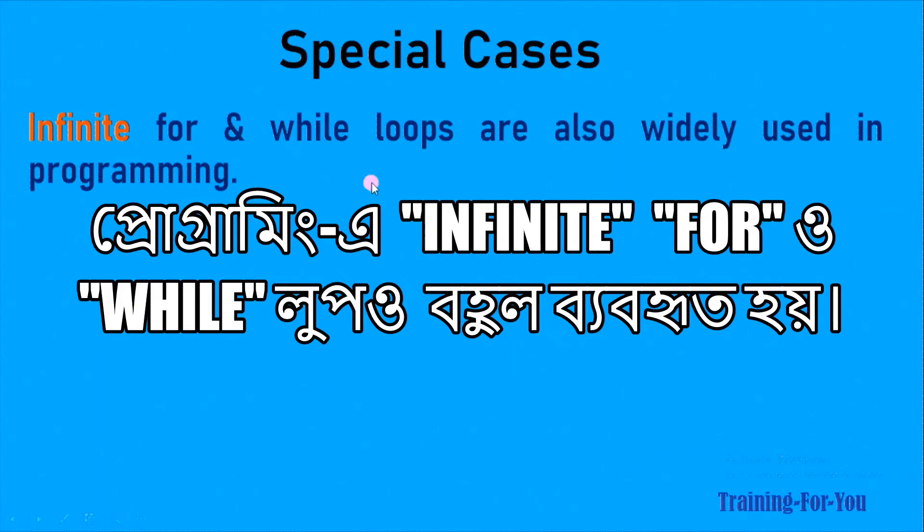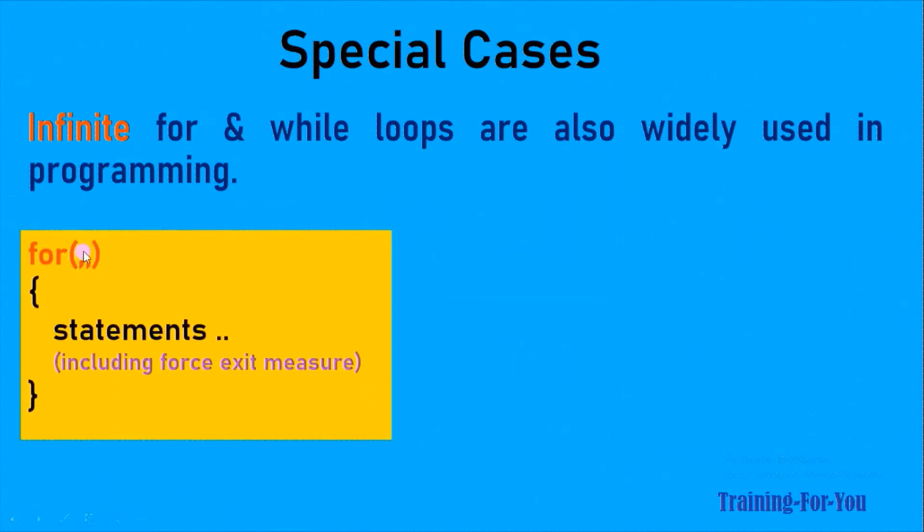Infinite for and while loops are also widely used in programming. The infinite for loop looks like this: when we don't keep any condition here, it becomes an infinite for loop. But we need to remember that even though there is no expression inside this parenthesis, the semicolons are a must.